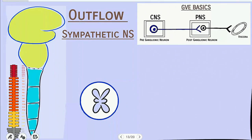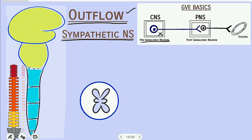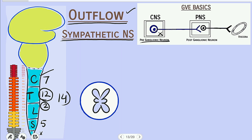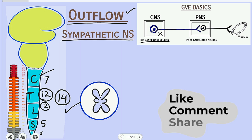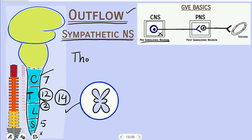Note down all these responses of the viscera in the parasympathetic and sympathetic phases. Now I'll talk about the outflow of the autonomic nervous system. Outflow means where the pre-ganglionic neuron is located in the CNS. For the sympathetic nervous system, pre-ganglionic neurons are present in the spinal cord — specifically from the 12 thoracic segments and the first 2 lumbar segments, a total of 14 spinal cord segments. We name this outflow as thoracolumbar: thoraco refers to the thoracic segments and lumbar refers to the 2 lumbar segments.